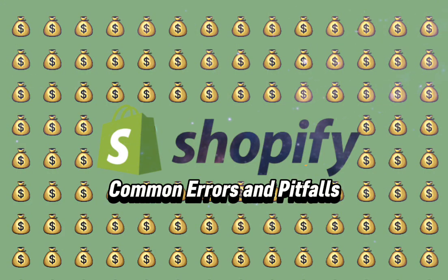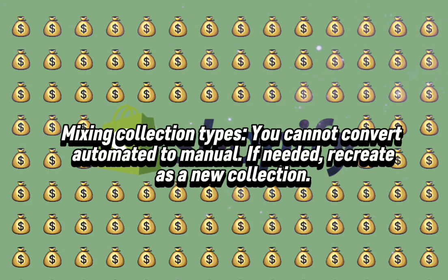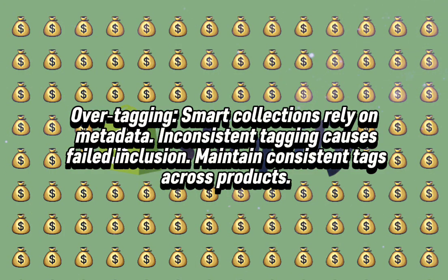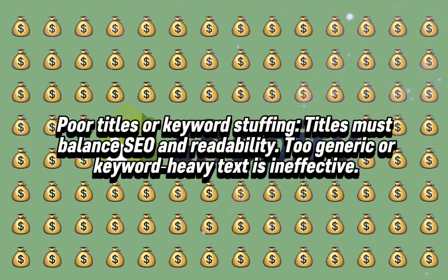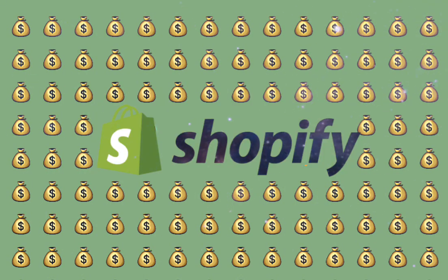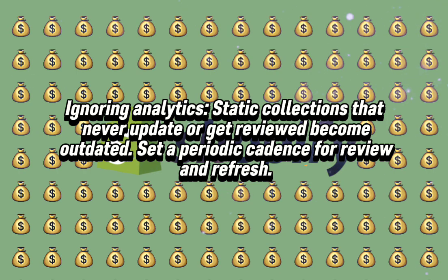Common Errors and Pitfalls. Mixing collection types: you cannot convert automated to manual — if needed, recreate as a new collection. Over-tagging: smart collections rely on metadata, and inconsistent tagging causes failed inclusion — maintain consistency in tags across products. Poor titles: titles must balance SEO and readability — too generic or keyword-heavy text is ineffective. Unused or hidden collections: creating collections but not linking them means they are never discovered — ensure all collections are accessible in navigation or content. Ignoring analytics: static collections that never update or get reviewed become outdated — set periodic reviews.